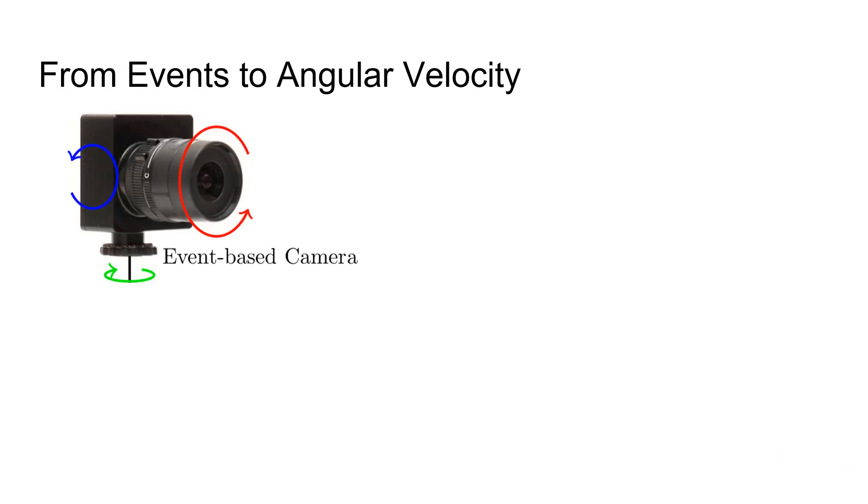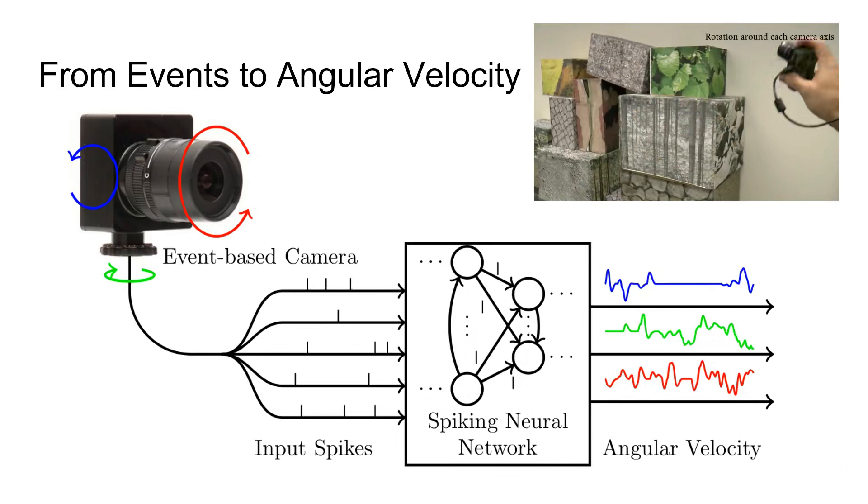In this work, we investigate the problem of regressing the angular velocity of an event camera with a spiking neural network, abbreviated with SNN.